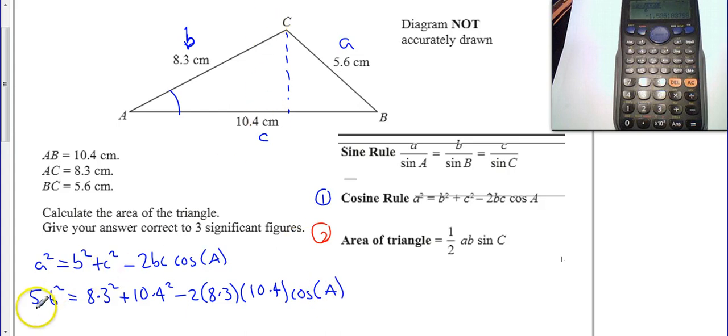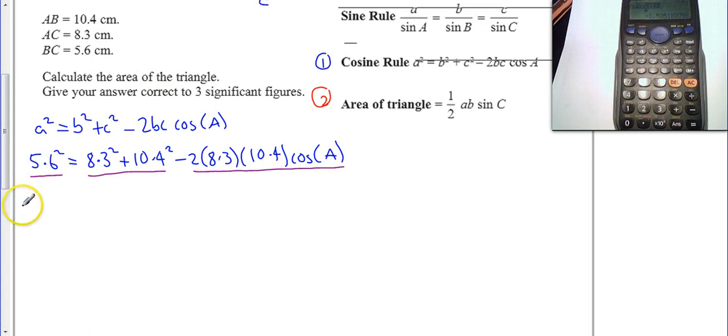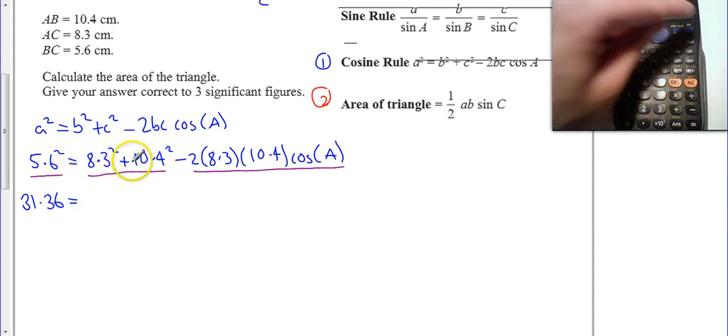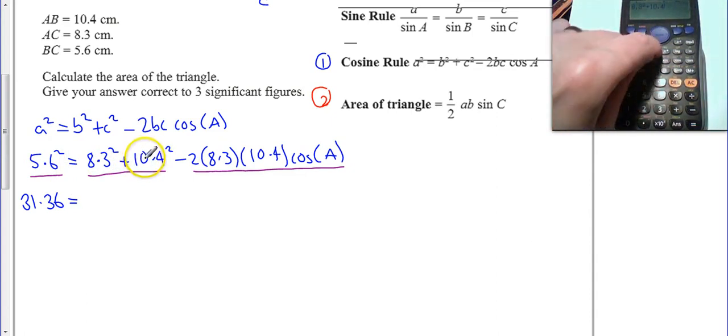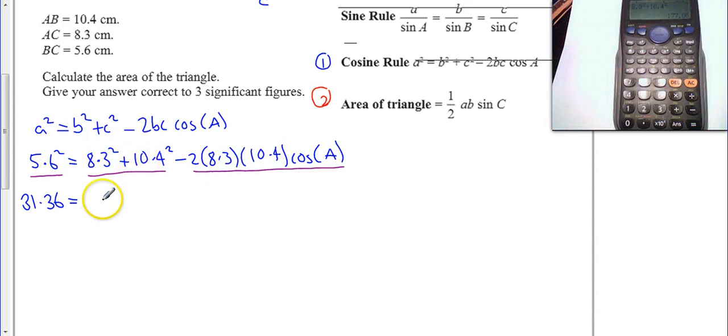One little trick, a common mistake I often find: this is one thing we can work out in a calculator, this is something else, but this minus two lots of 8.3 times 10.4 cos A is all one thing. So we can't just subtract this number from this. We have to divide because it's multiplied by cos A. Let's go ahead and work out what 5.6 squared is. That's 31.36 is equal to, if I do the 8.3 squared and 10.4 squared on my calculator, I get 177.05 minus two times 8.3 times 10.4, minus 172.64 cosine A.